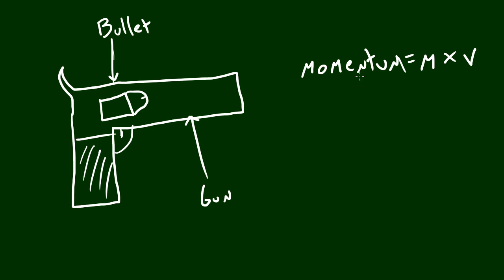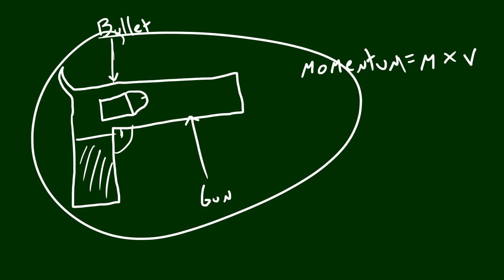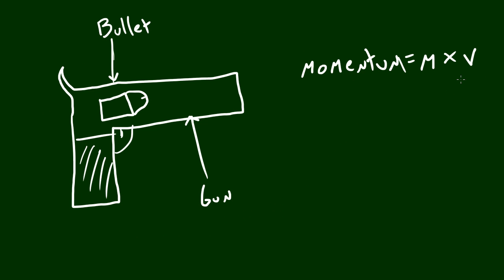So, right now, let's go ahead and figure out the total momentum of the system. Well, you guys are probably saying, wait a minute. What's the mass of the bullet? What's the mass of the gun? You know what? It doesn't matter. Because the velocity of this entire system is zero. Obviously, it's not moving. You're not doing a drive-by or anything.